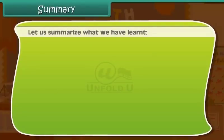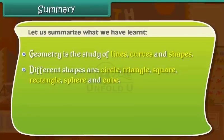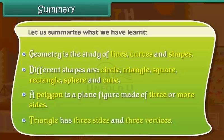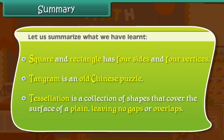Let us summarize what you have learned. Geometry is the study of lines, curves, and shapes. Different shapes are circle, triangle, square, rectangle, sphere, and cube. A polygon is a plane figure made of three or more sides. Triangle has three sides and three vertices. Square and rectangle have four sides and four vertices. Tangram is an old Chinese puzzle. Tessellation is a collection of shapes that cover the surface of a plane, leaving no gaps or overlaps.